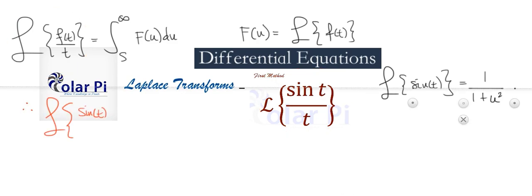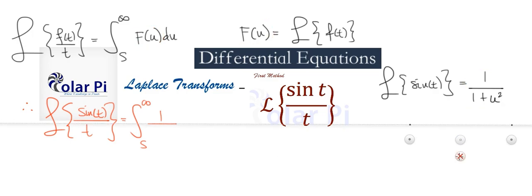So let's get on with it. The Laplace transform for sine t over t, as we said, will be the integral from s to infinity of 1 over 1 plus u squared du, and this is an easy, familiar antiderivative.